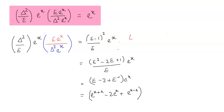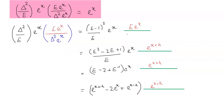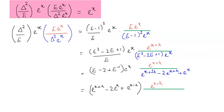Our second part is e^x, which can be written as e^(x+h). For the third part, delta can be written as (e-1)² eˣ. Opening up the bracket and squaring the terms, we get e² minus 2e plus 1 and the function is e^x. Applying this operator to the function, this value becomes e^(x+2h) minus 2 times e^(x+h) plus e^x.